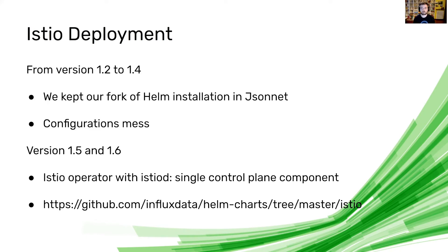It was a configuration mess. Istio needed five to six config maps with multiple files that needed to combine with each other. From version 1.5 — introduced in alpha in 1.4 — they introduced the Istio operator. If you're familiar with Kubernetes operators, it abstracts complexity from your deployment. You just say 'I want an Istio control plane, I want an Istio mesh,' and the operator delivers and installs all the necessary pieces. Also in 1.5 they went from five or six control plane microservices back to a single service — Istiod — which you can scale up and down.